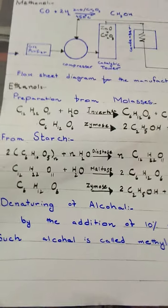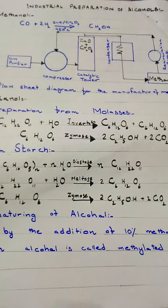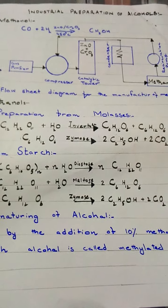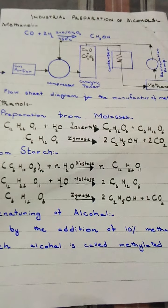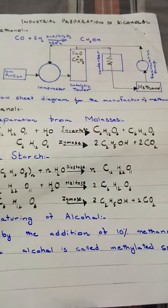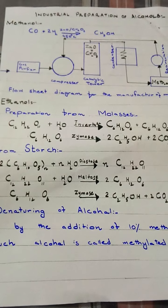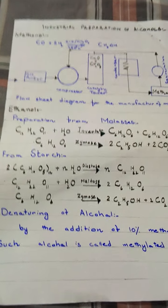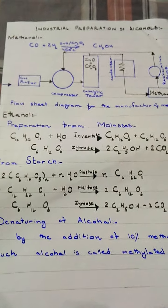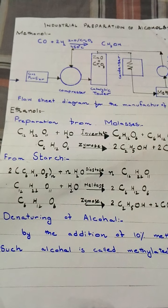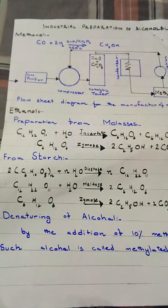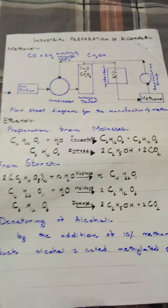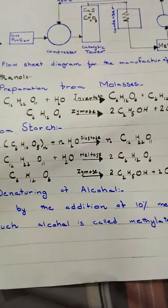Other methods of preparation of alcohol can also be used. Alcohols can be obtained by the hydration of alkenes and by the reaction of Grignard reagent with aldehydes or ketones, as studied in the last chapter. Using Grignard reagent reactions with aldehydes and ketones, primary, secondary, and tertiary alcohols can be obtained.